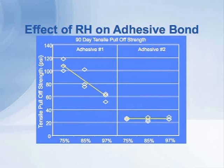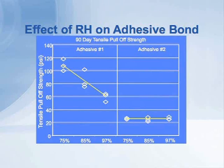Across the bottom we see different exposures to humidity: 75, 85, 97%. Looking at the left-hand graph first — adhesive number one — when that adhesive was exposed to 75% humidity, we found you could get 100 to 120 psi bond strength. At 85% relative humidity the strength went down to between 80 and 100 psi — it lost about 20% of its strength. The third experiment at 97% relative humidity shows the bond strength has been cut in half.